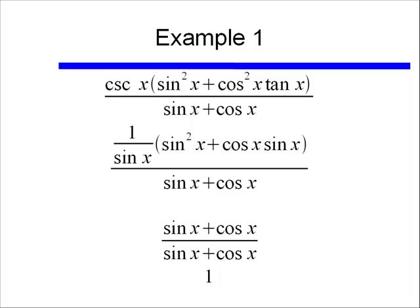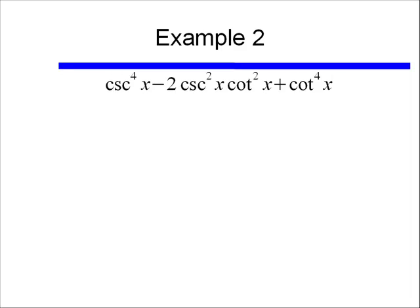Well that was awfully neat, I started off with that big mess, and I ended up with the number 1. Let's look at a second example. What I've been doing is changing all my cosines, and cosecants, and cotangents into sines and cosines. But to be honest, in this case, I might hold off, because I don't see any sines and cosines right now. In fact what I'd like to do, is factor this.